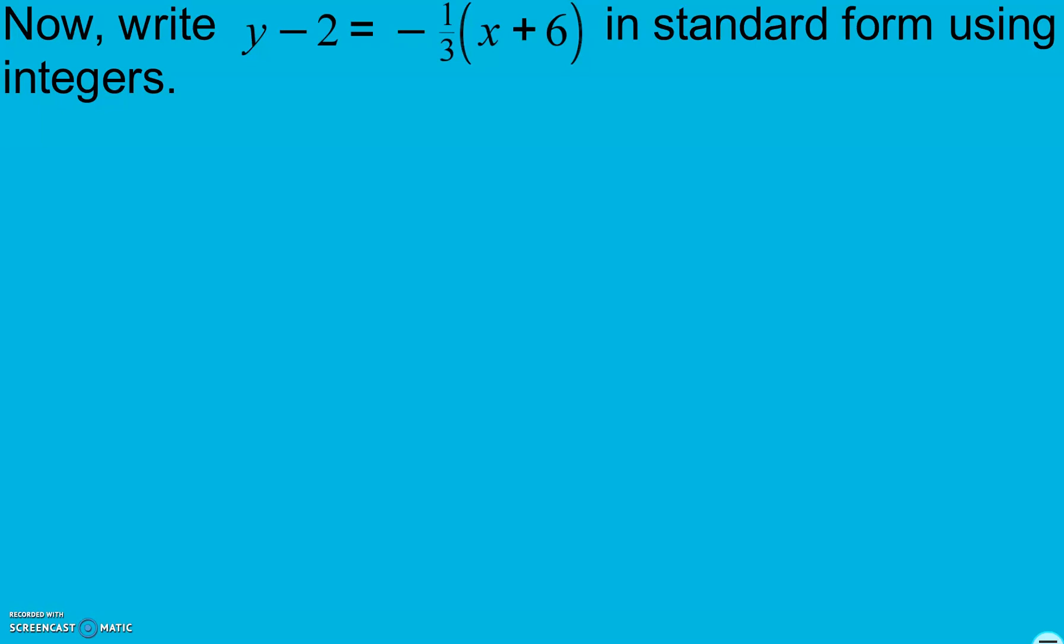We're going to write y minus 2 equals negative 1 third times the quantity x plus 6 in standard form using integers. So it's in point slope form right now. The first thing I'm going to do is simplify both sides the best that I can. So I'm going to distribute negative 1 third x minus 2. Now I'm going to get all of my variables together on one side so I do the opposite. Instead of being a negative 1 third I want a positive 1 third. So I get 1 third x plus y minus 2 equals negative 2.